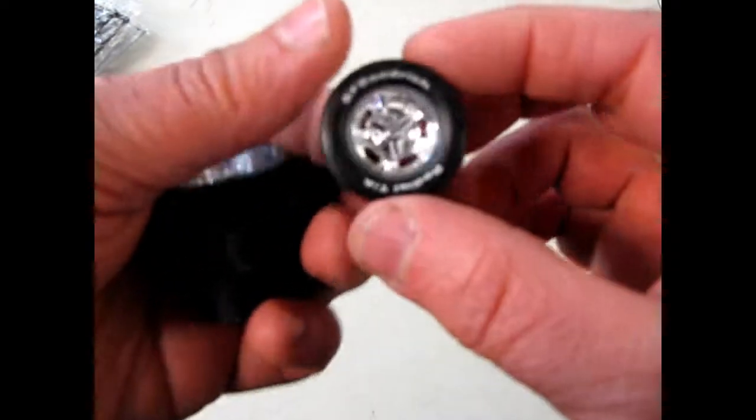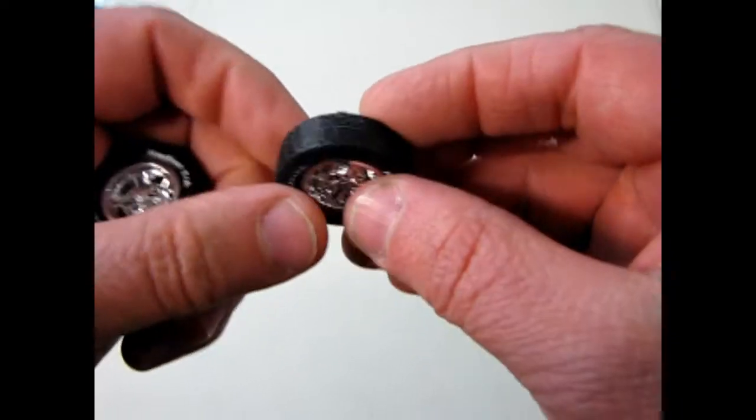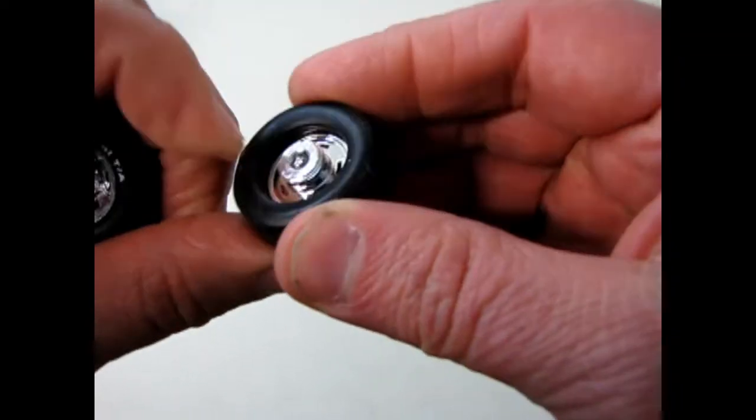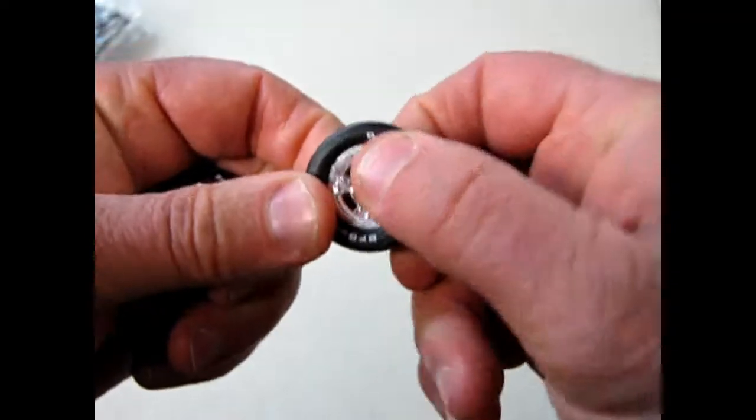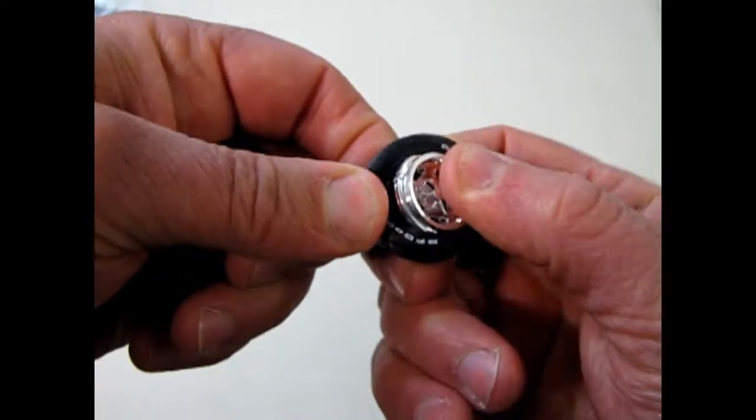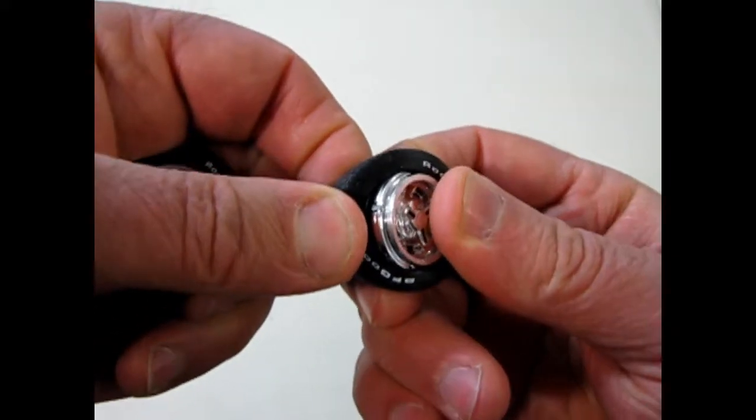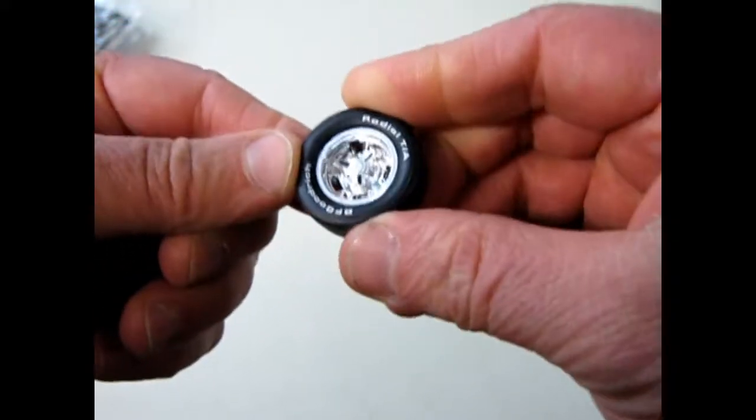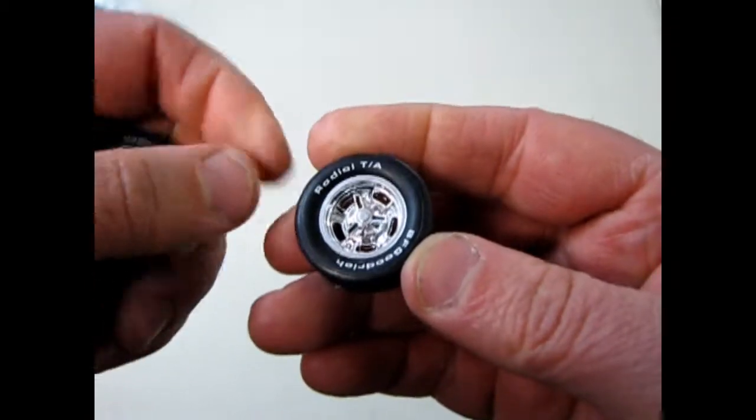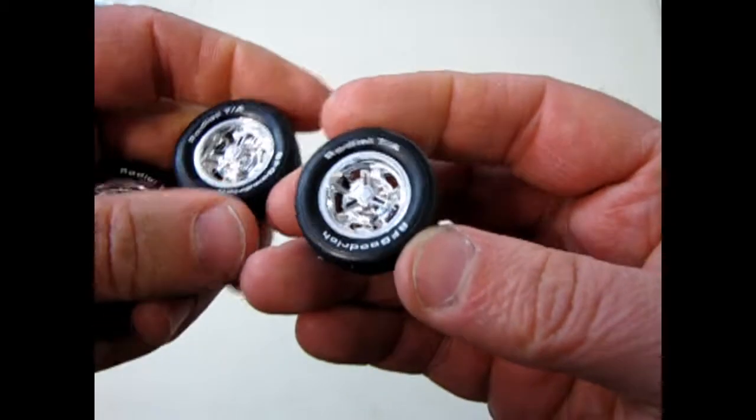So here we have these wheels. These are beautiful. The tires rubbery. Like actual rubber. And of course the wheels have that kind of groove similar to how the slot car wheels work. Then you can see the raised lettering. Radial TA by BF Goodrich.